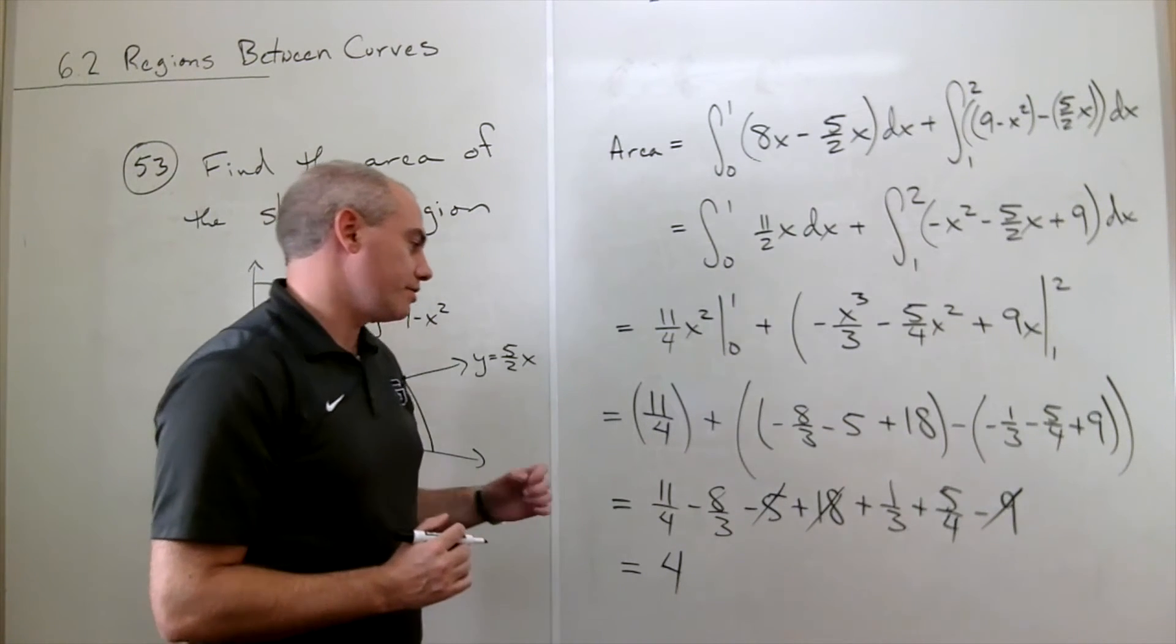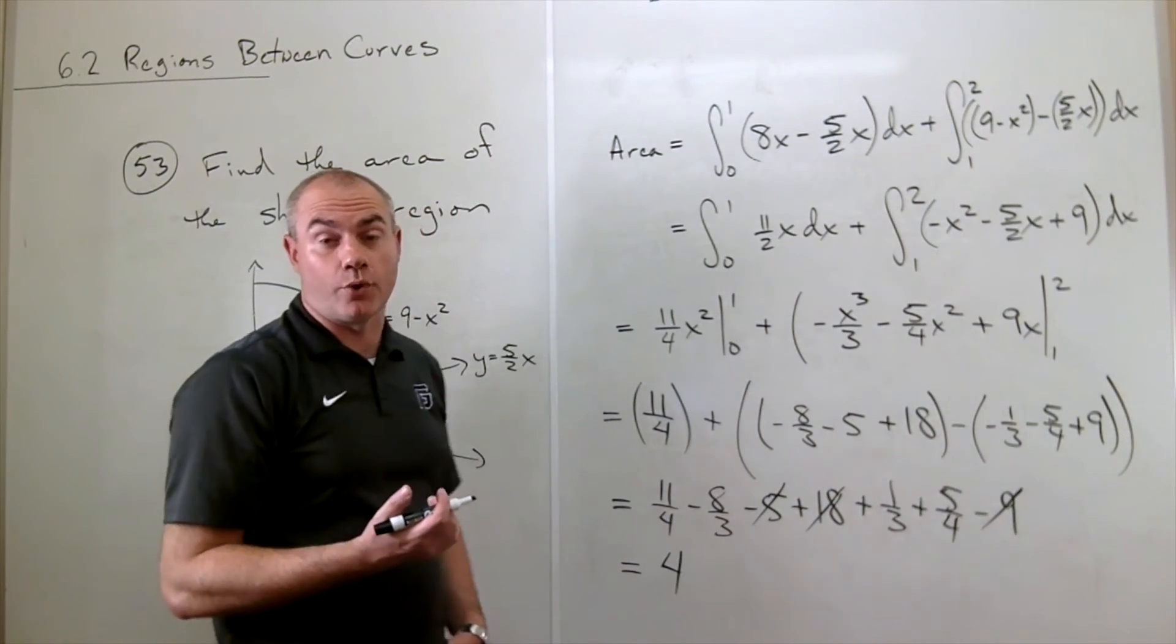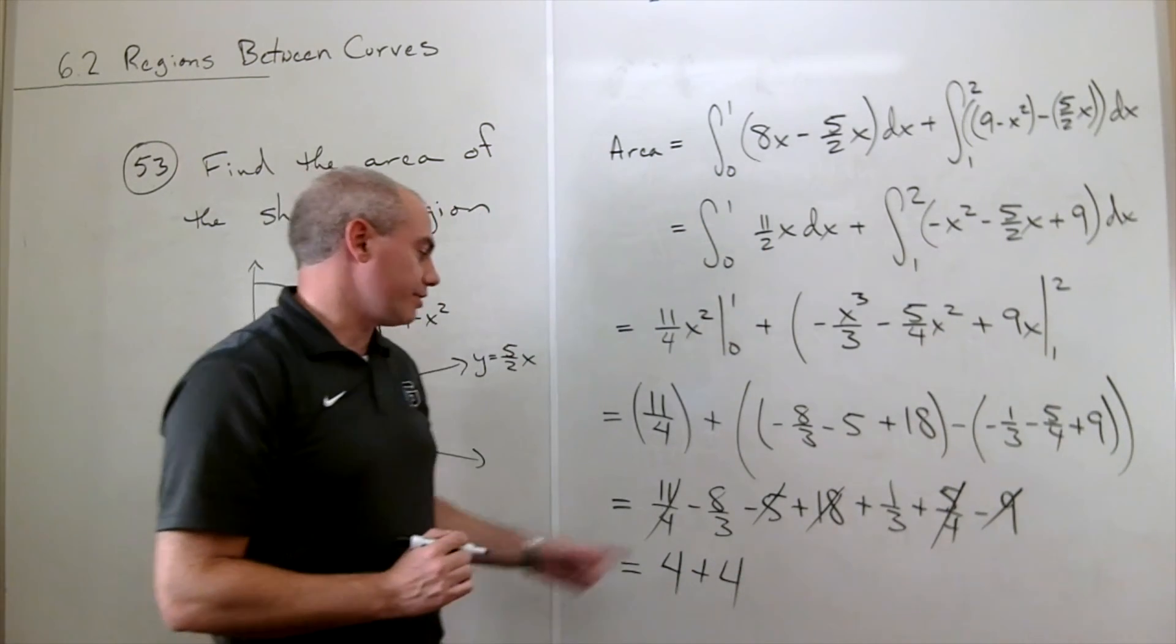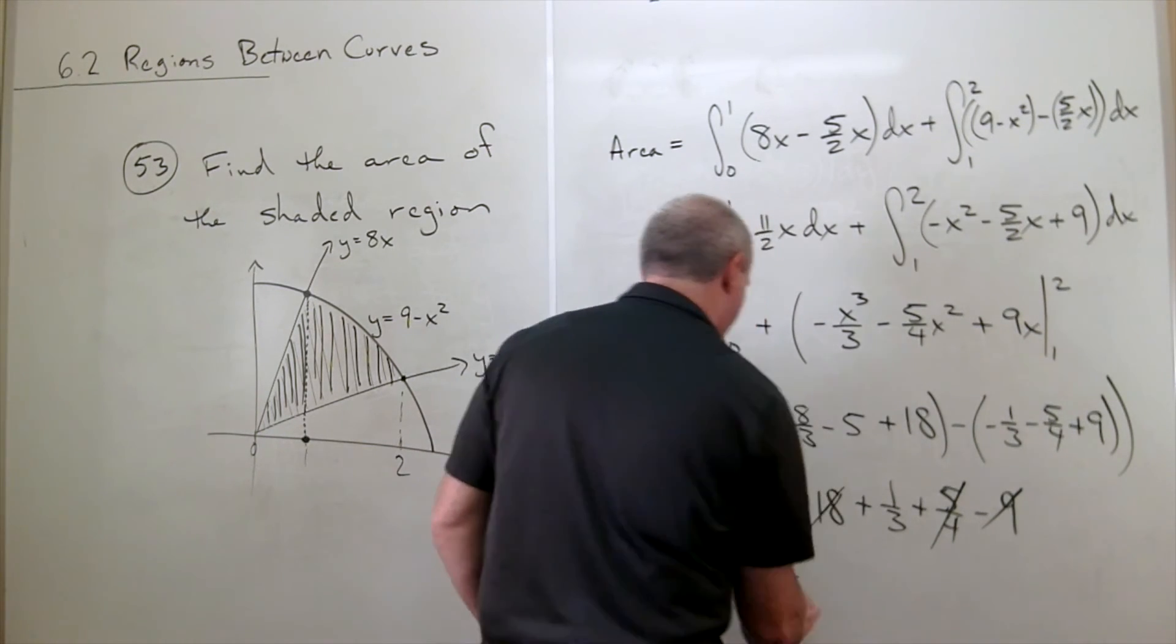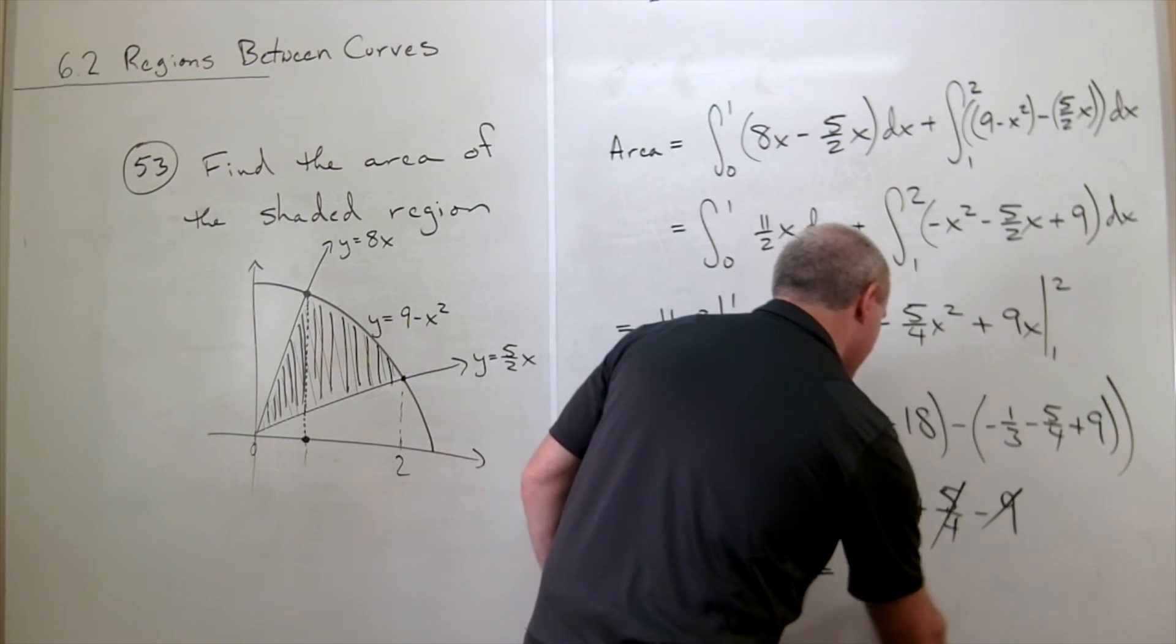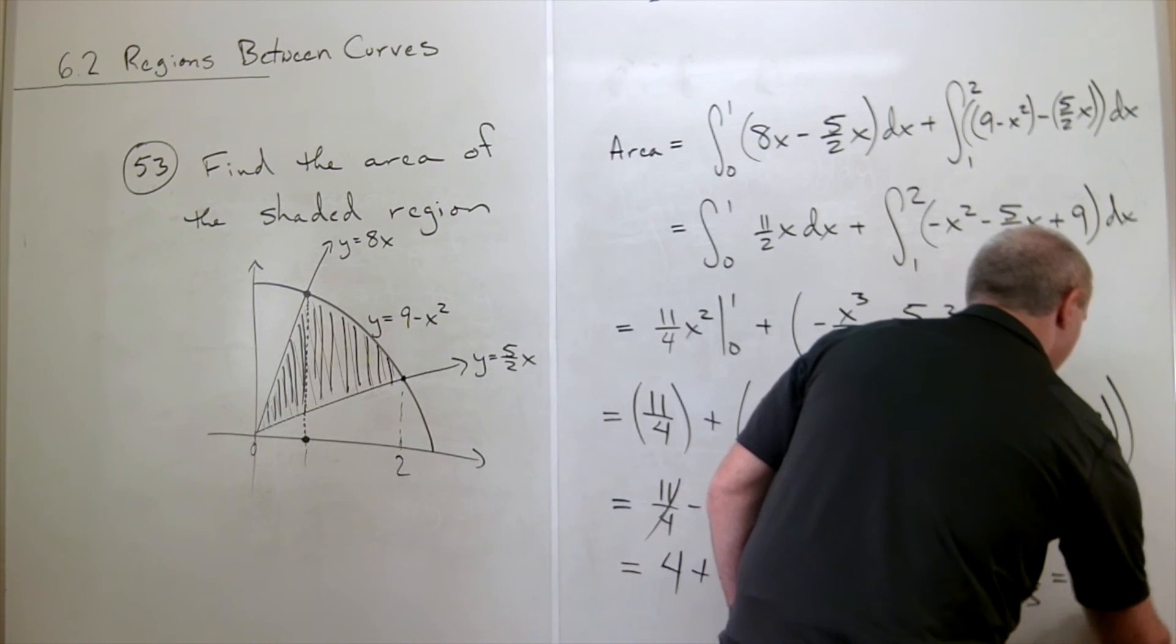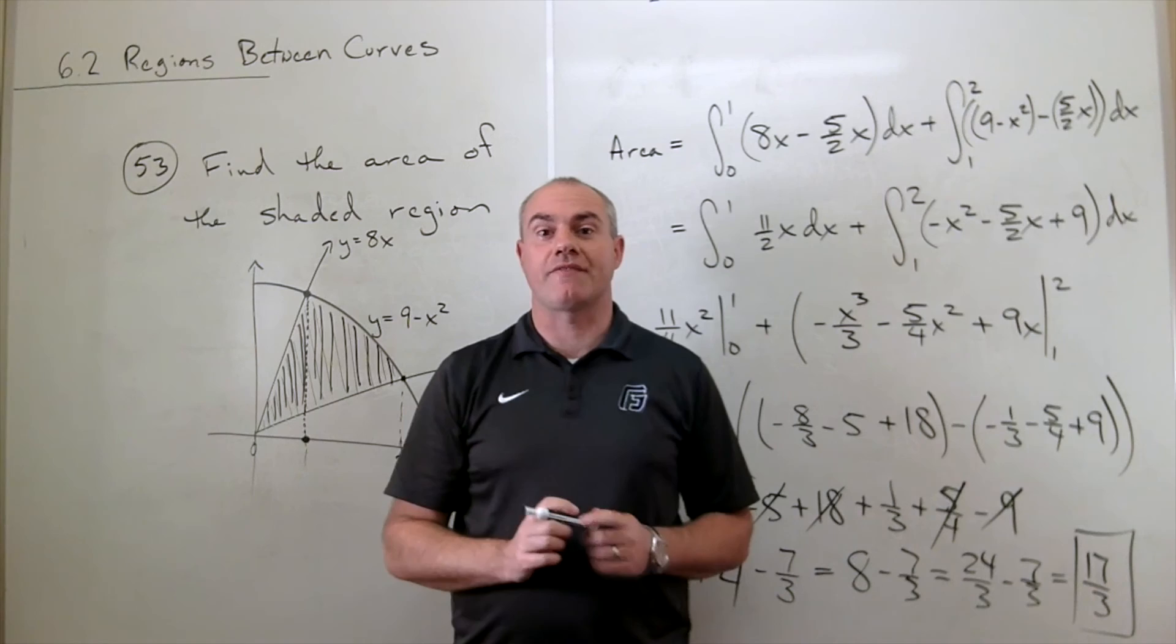Let's take my fourths. I have 11 fourths plus 5 fourths. That's 16 fourths. And 16 fourths is the same as 4. So we get an additional 4. And then I have my thirds, which is minus 8 thirds plus 1 third, which is minus 7 thirds. 4 plus 4 is 8, minus 7 thirds. How many thirds is an 8? That's 24 thirds, minus 7 thirds equals 17 thirds. So the amount of area trapped in this shaded region is exactly 17 thirds.